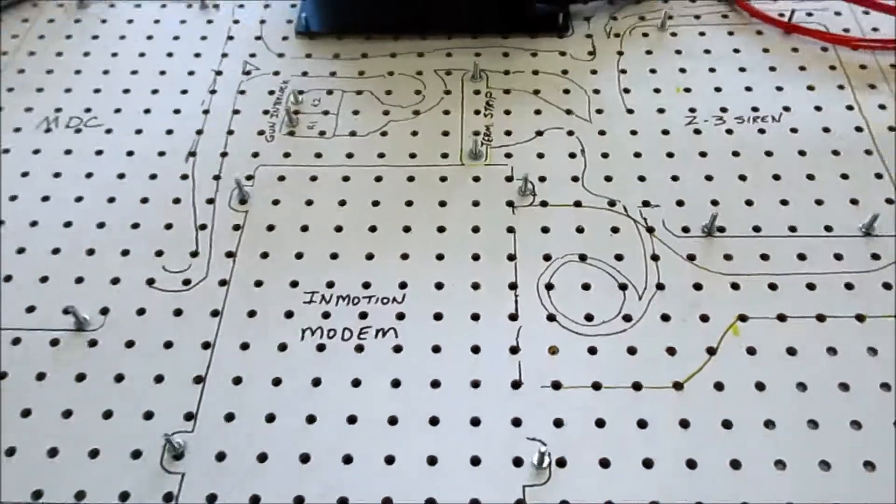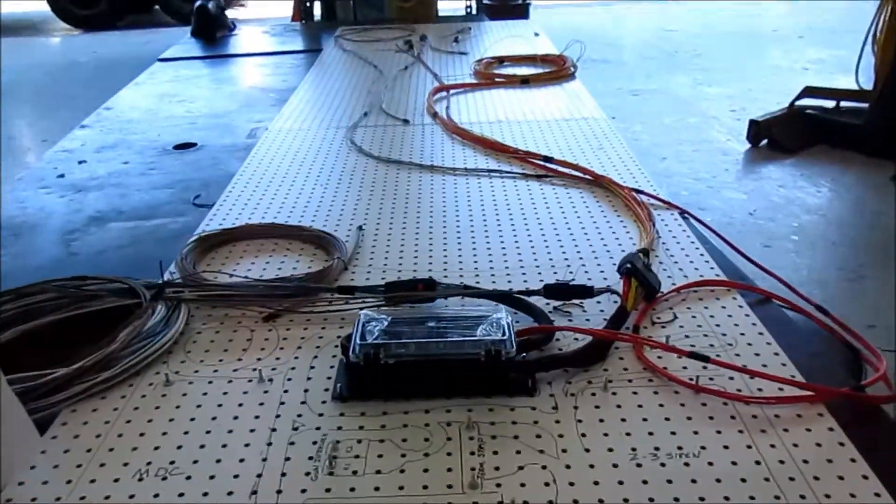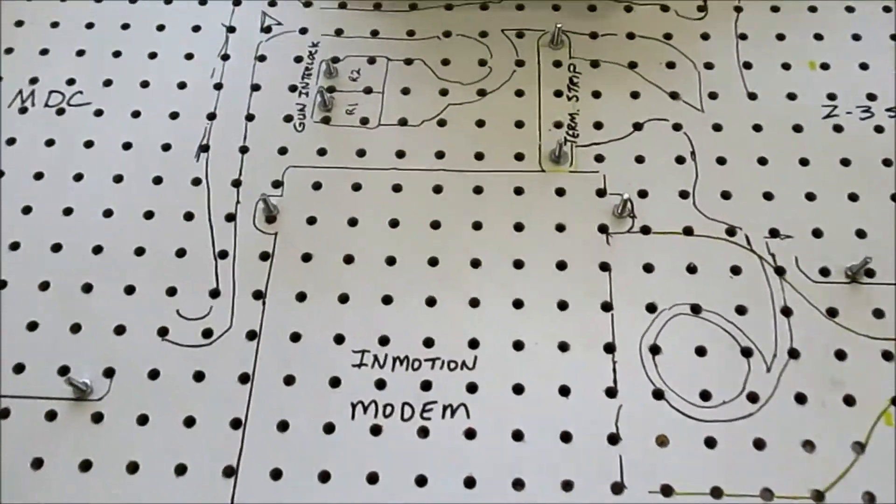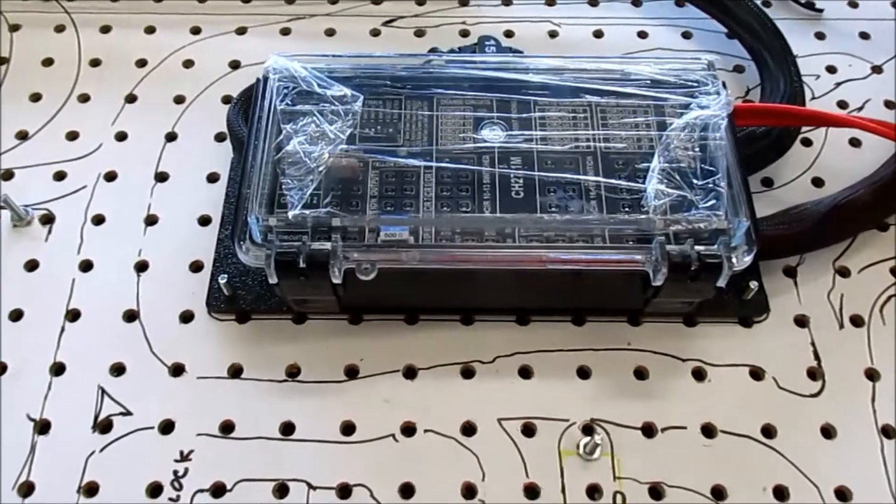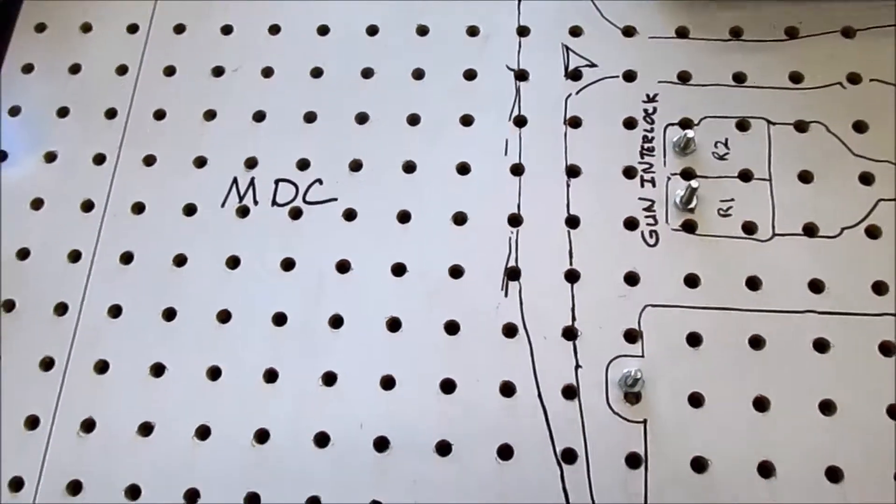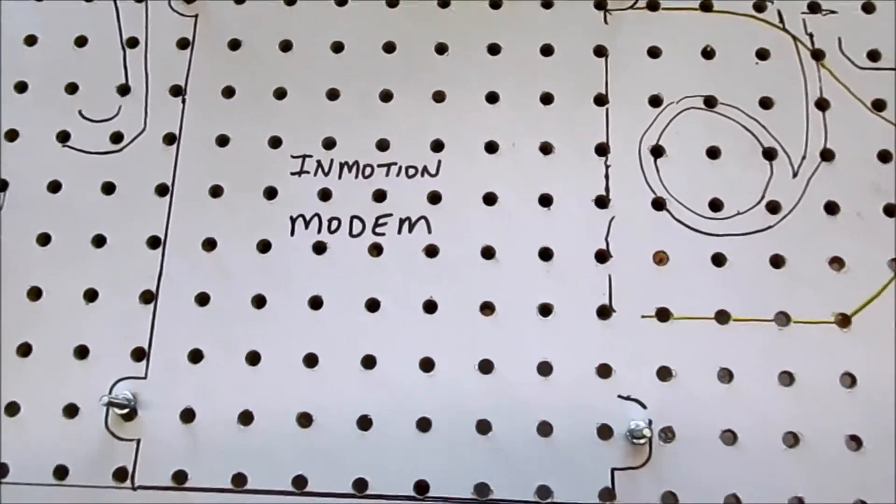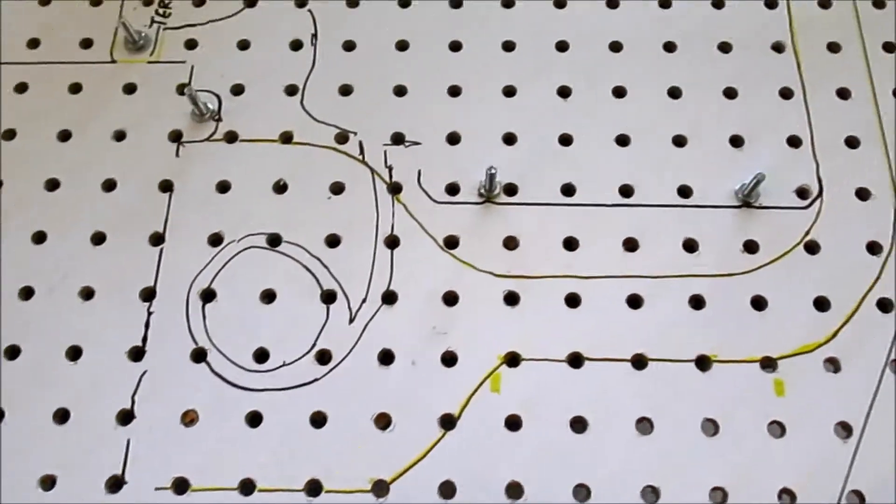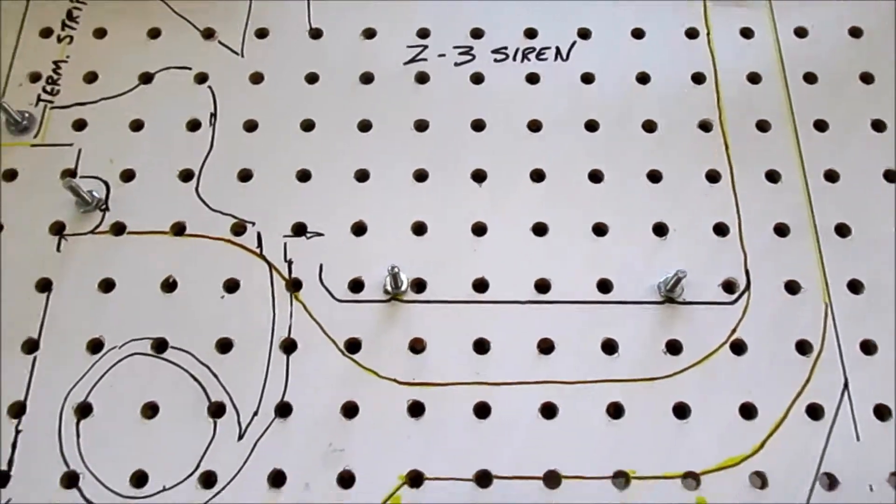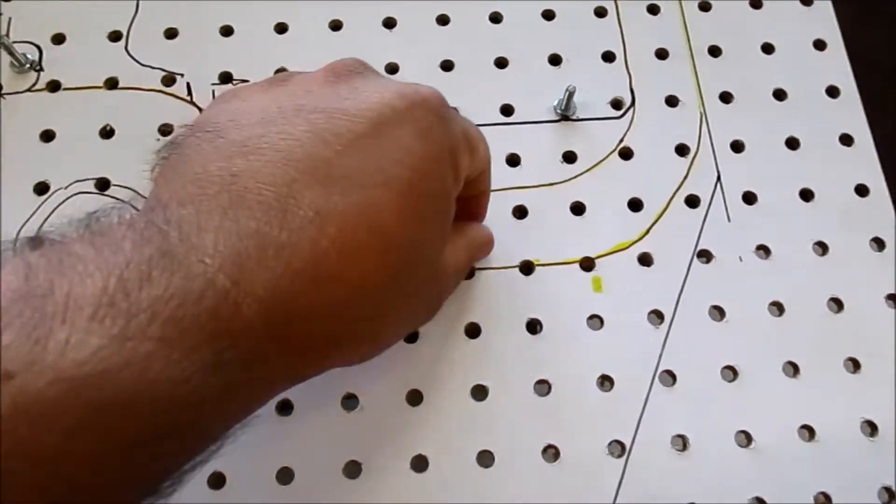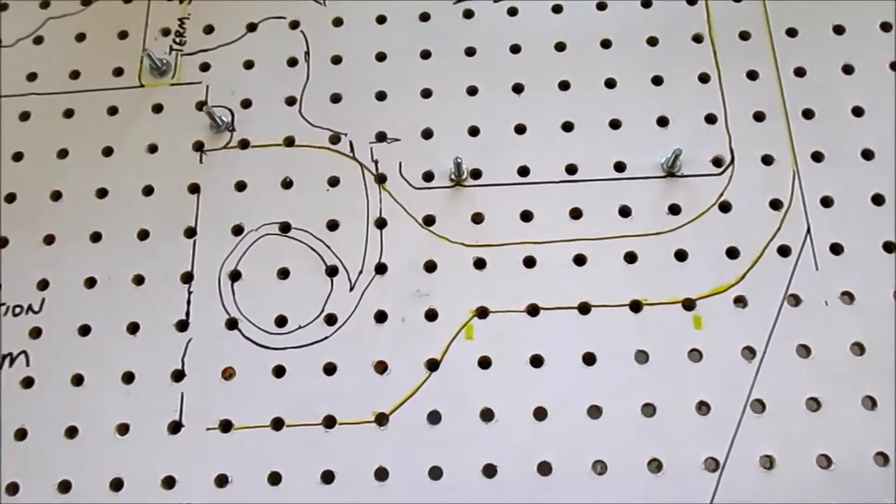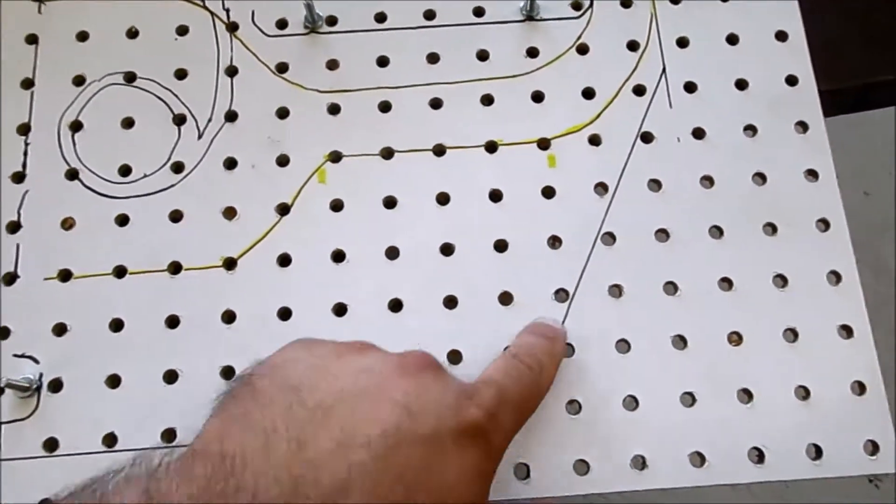We have it set up on here and then we have a spot for all of our components, like where our MDC goes. We've got some relays, the modem, and our Z3. You can see here this is kind of a guide for us of where the wiring will go and you can see these angles here.